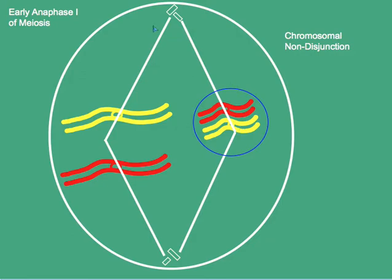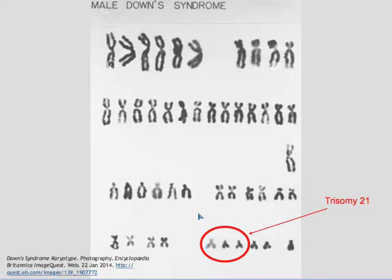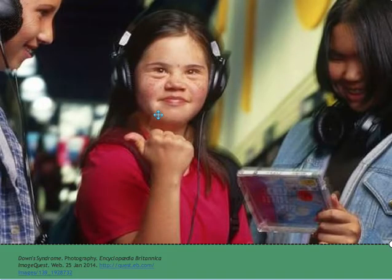If these two chromosomes are members of the number 21 set, then what should be a pair now becomes a trio, and the result is trisomy 21 or Down syndrome. A child with Down syndrome faces many challenges.